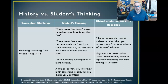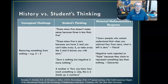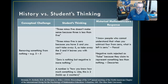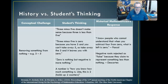Rene Descartes — maybe that name rings a bell; he's famous for saying 'I think, therefore I am' — for Descartes, negative roots, like in a solution to a problem, were rejected as false because they claimed to represent something less than nothing. How can you have something that's less than nothing — a negative quantity?